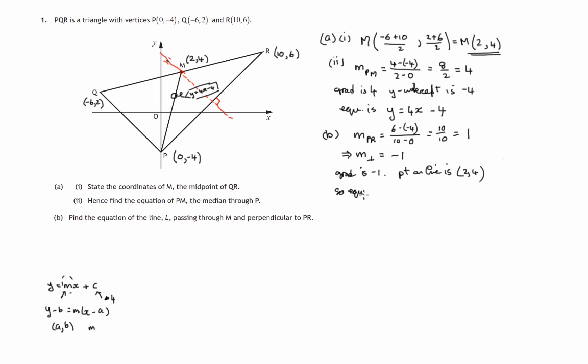So the equation of the line, as we said, we're using Y minus B equals MX minus A. So it is Y minus the Y coordinate, 4, equals the gradient, negative 1, times X minus the X coordinate, 2. Let's tidy that up. That'll give us Y minus 4 equals negative X plus 2. Adding 4 to both sides, Y equals negative X plus 6, or Y plus X equals 6 is another way of writing that. So there's the equation of the perpendicular to PR that passes through M.